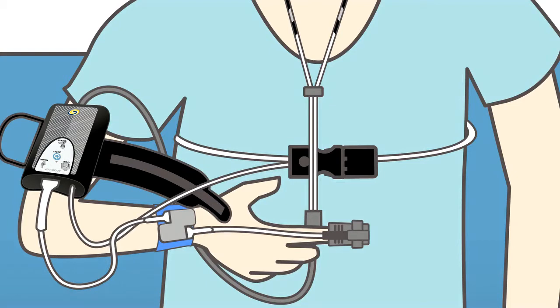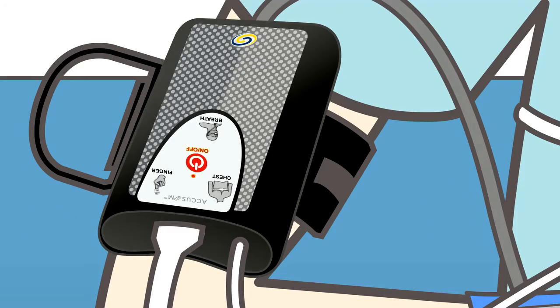Strap the device to your arm, then turn on the device by pressing and holding the on-off button for five seconds and letting go. Lights will flash orange during the system's check.